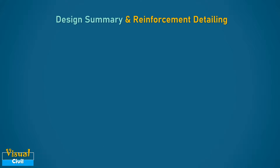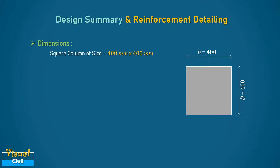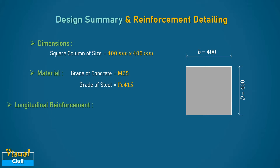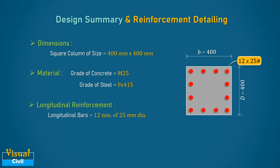In summary, a corner column of size 400 mm × 400 mm subjected to axial load with biaxial moment is designed using M25 grade concrete and Fe415 steel. The final design provides 12 bars of 25 mm diameter as longitudinal reinforcement, and 8 mm diameter lateral ties at 300 mm center-to-center spacing.